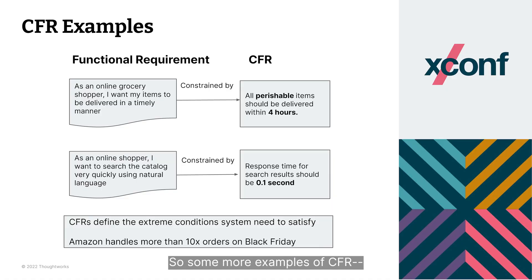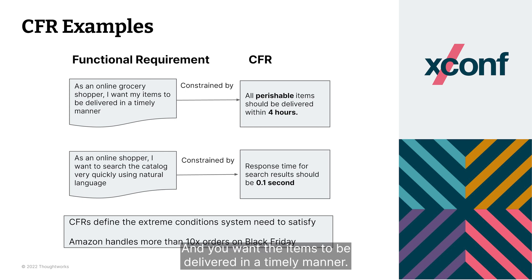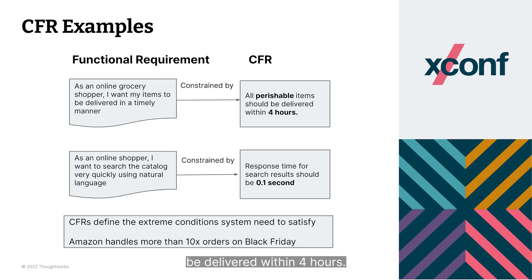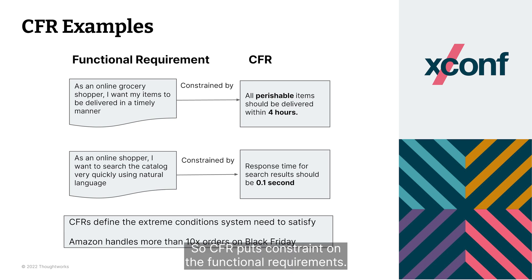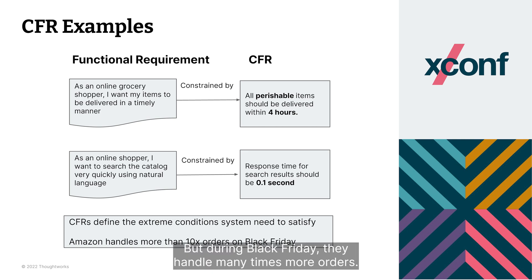Some more examples of CFR: for an online store, you can think of placing an order and wanting items to be delivered in a timely manner. An example of CFR would be that perishable items should be delivered within four hours — so CFR puts a constraint on the functional requirements. CFRs also define the extreme conditions a system needs to satisfy. For example, Amazon handles 1.6 million orders per day, but during Black Friday they handle many times more, so the system should scale to address extreme conditions.